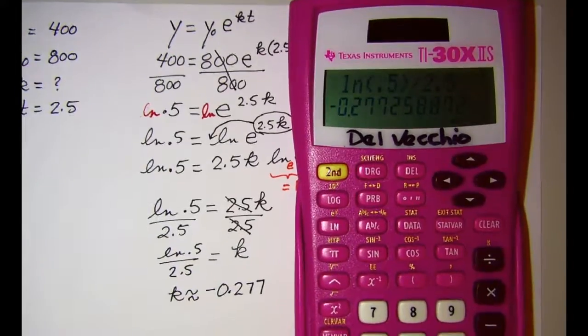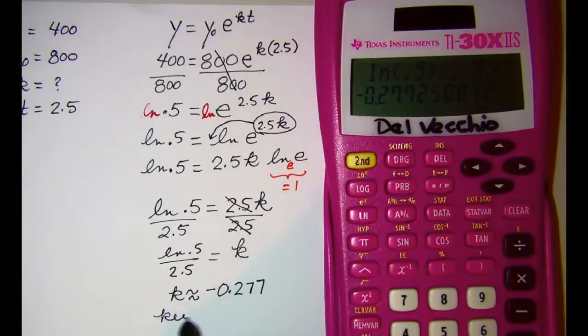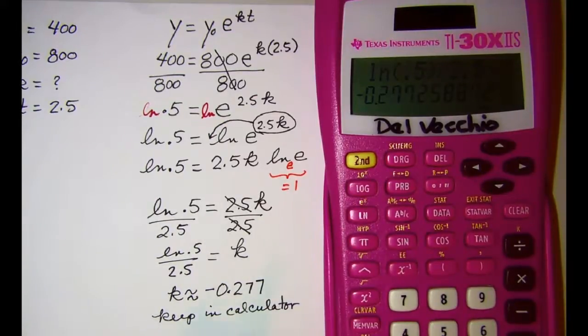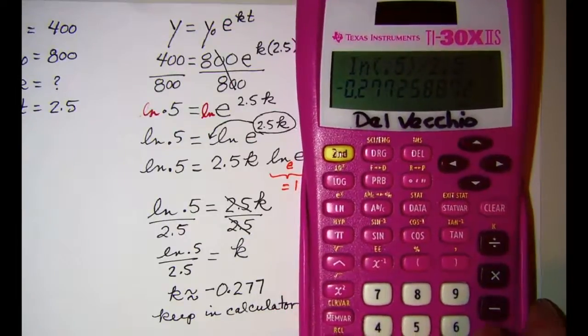Now we want to keep this value in the calculator. So even though we wrote k as three decimal places we're going to use the whole decimal that's in the calculator for our calculations. And the way that we do that is to store it in the memory.